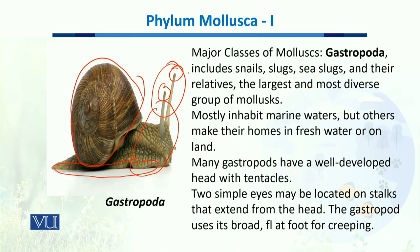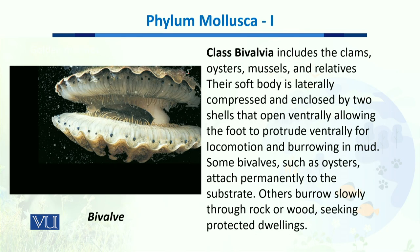Gastropods use their broad and flat foot for movement, though their movement is very sluggish and slow. The other major class, Bivalvia, includes clams, oysters, mussels, and their relatives. Their soft body is laterally compressed, enclosed by two shells — an upper shell and a lower shell — as you can see.